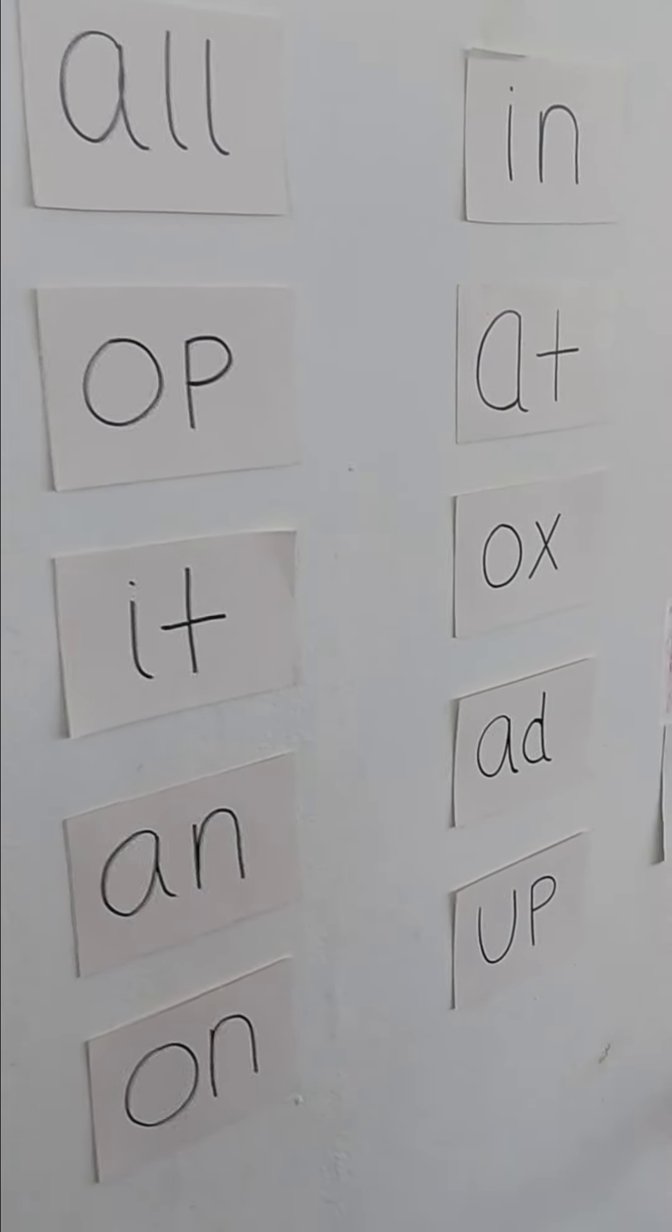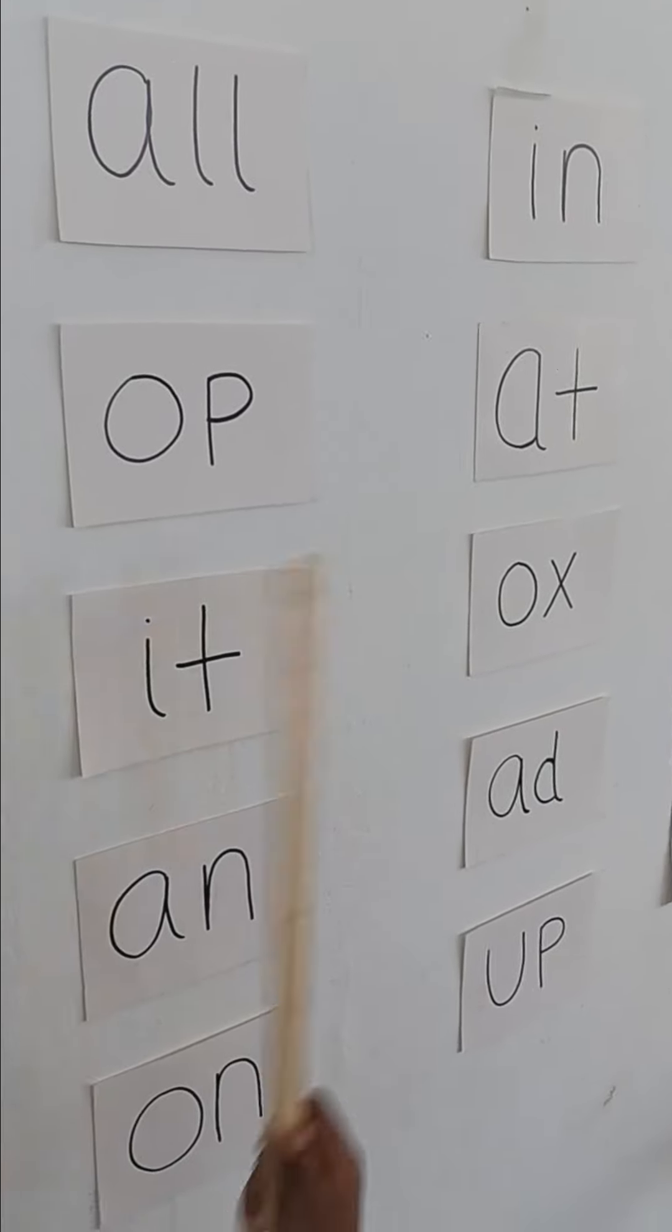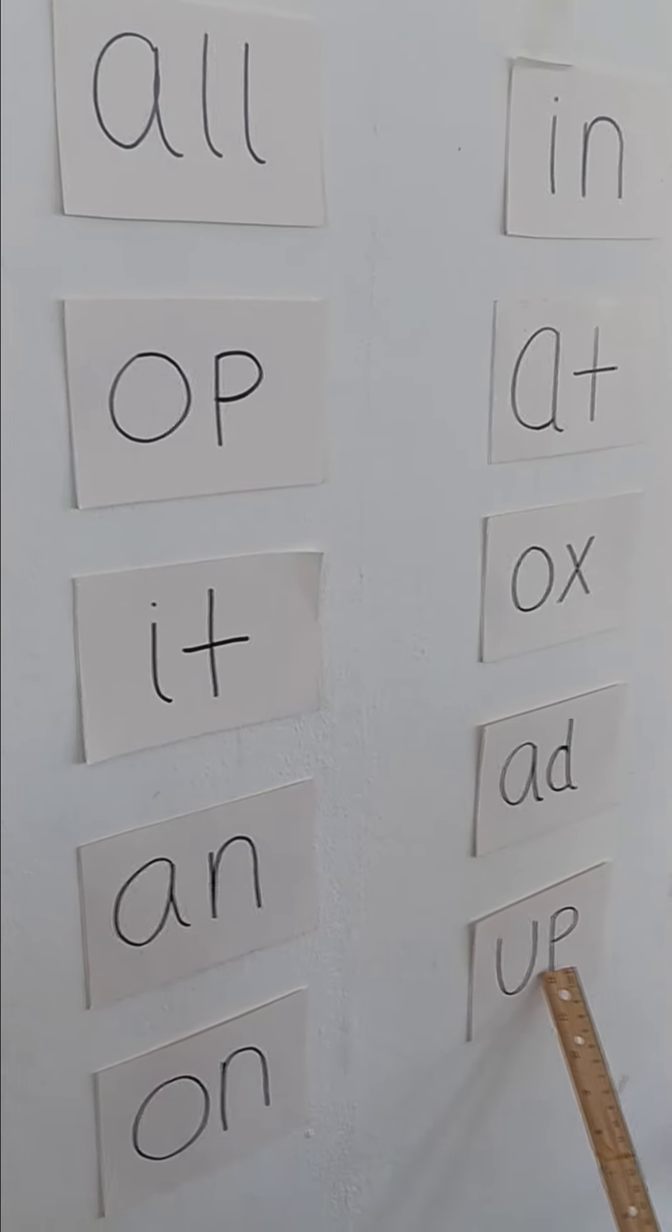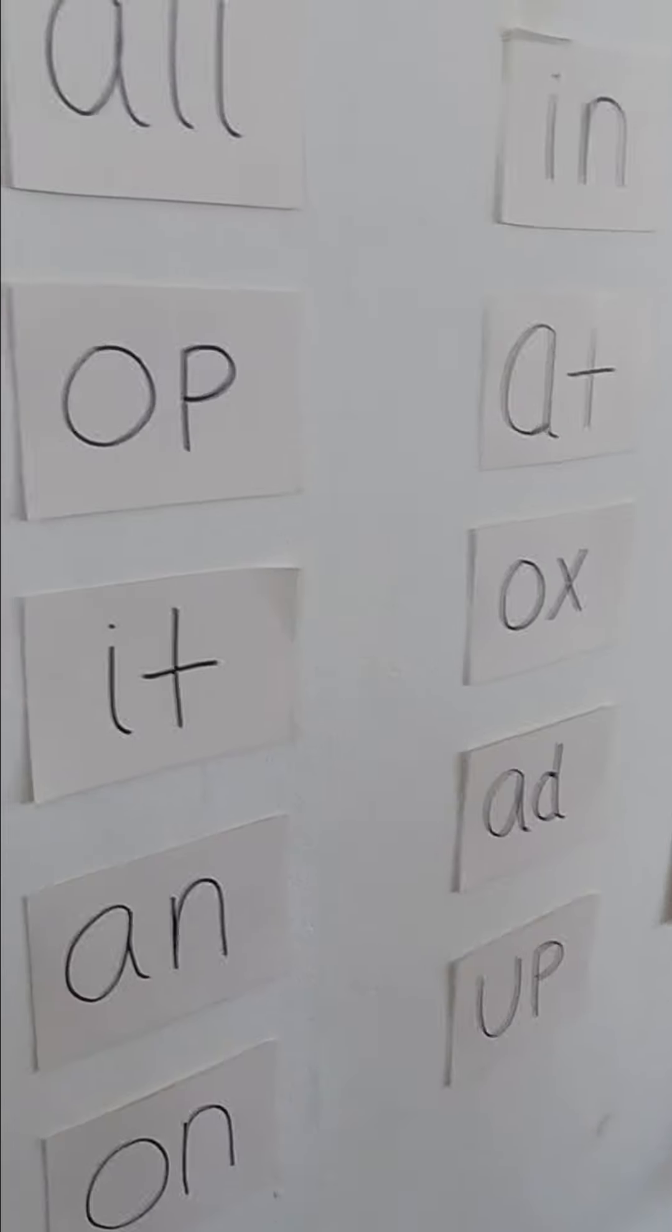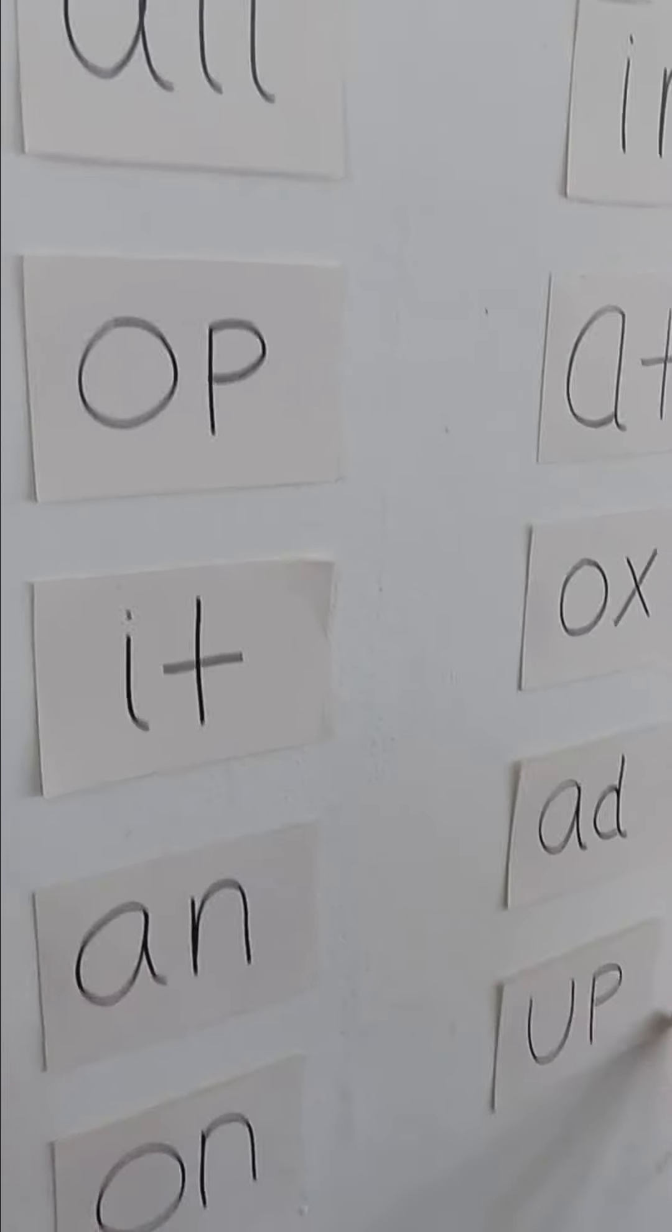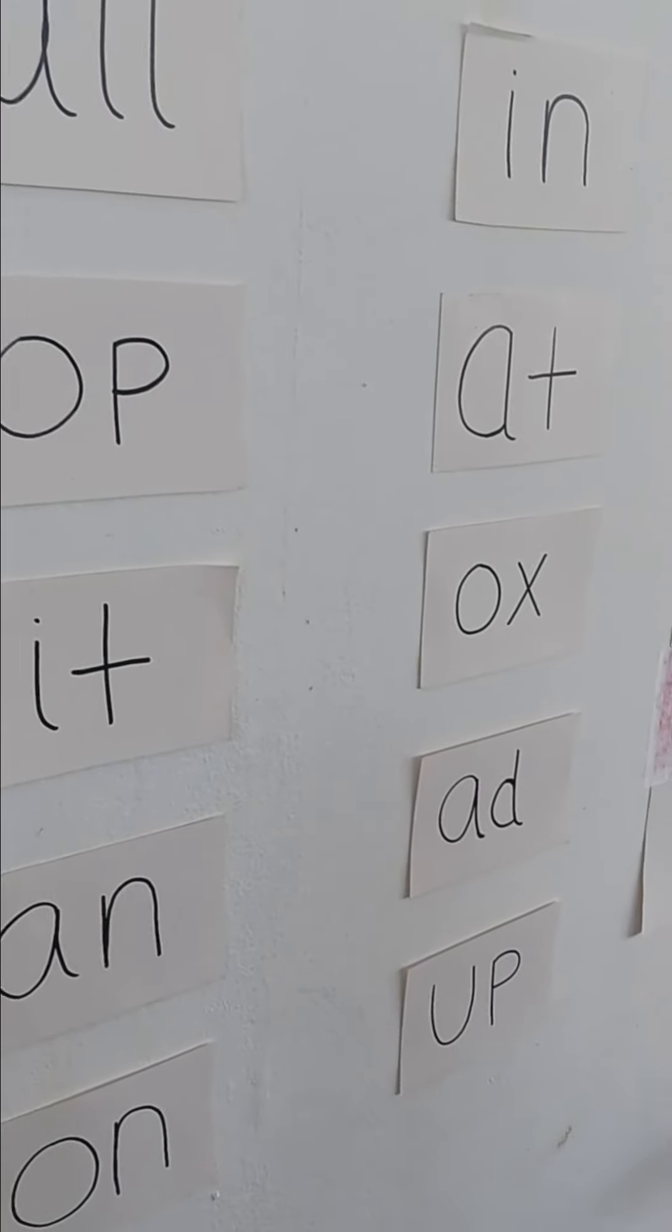Alright, so tell me which one is up. This one down here, up. U-P, up. I need you to speak up. This one's up, right here, U-P. How do you spell cup? C-U-B. Good job.